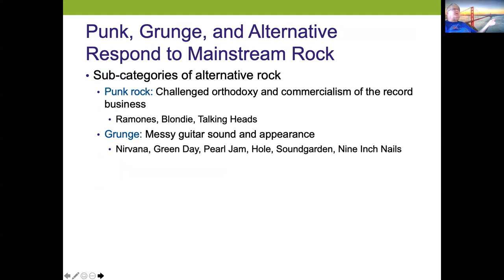Punk didn't really come about until the 80s — it was the next thing after disco. The late 70s were really bad musically. Punk challenged the orthodoxy and commercialism of the record business with the Ramones, Blondie, and the Talking Heads. It wasn't until about 1990 that we started to get grunge — the Seattle sound — with Nirvana, Green Day, Pearl Jam, Hole, Soundgarden, and Nine Inch Nails, all part of the grunge movement in the 90s.